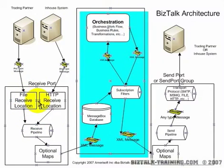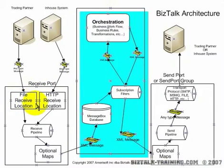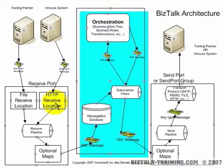You begin by receiving through a receive port, and a receive port can have one or perhaps many — 5, 10, 20 receive locations on it. So there's a one-to-many relationship between receive ports and receive locations. For example, if you had three vendors — IBM, Dell, and Gateway — ordering parts from your company, you might have one different receive port for each vendor, or one receive location for each vendor but they would all come to the same port.